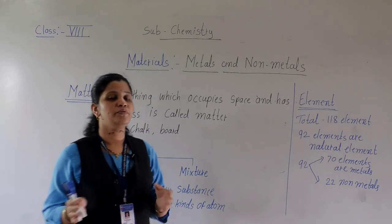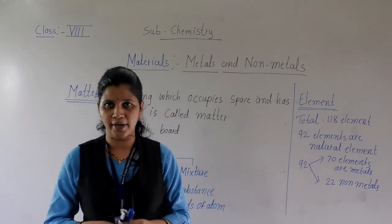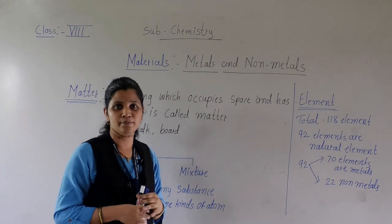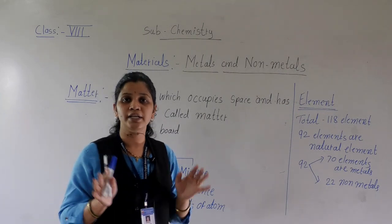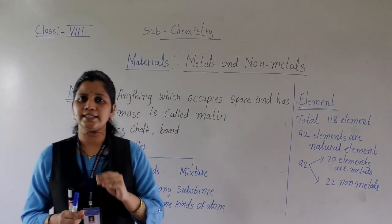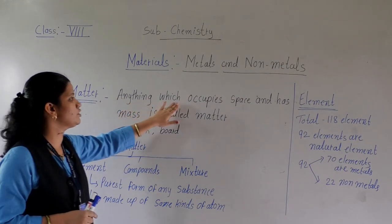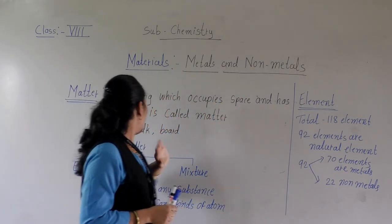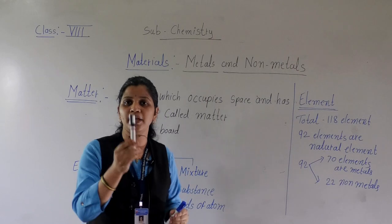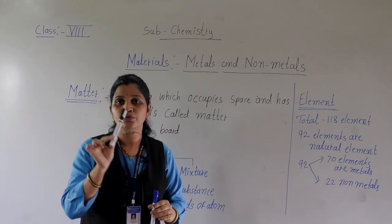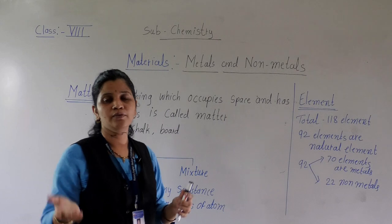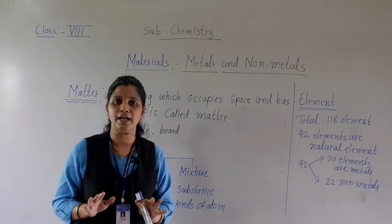Whatever things are around us are all known as matter. This pen is matter, this blackboard is matter, chalk and duster are matter — everything surrounding us is matter. The definition of matter is: anything which occupies space and has mass is called matter. For example, this pen occupies space here and also has mass, so it is known as matter.